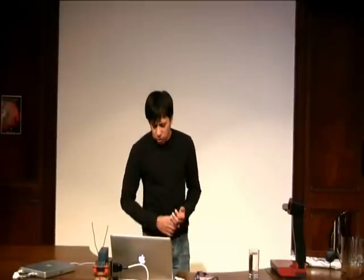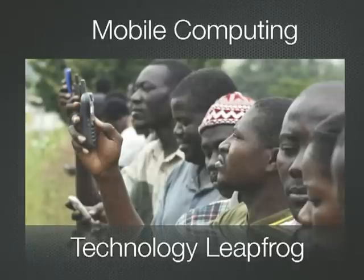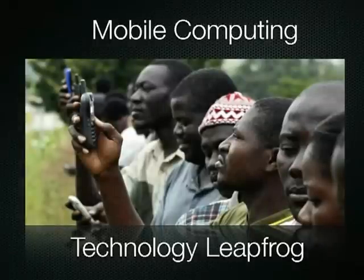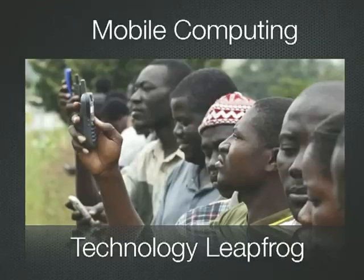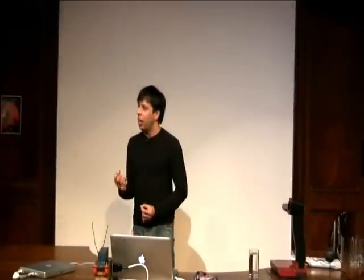Some of the more interesting things that mobile phones have done for us, we don't quite realise yet. For one thing, mobile phones are cheap and they are for everyone — it's not just a first world technology. There are entire communities in Africa, for example, that have never seen a regular landline and they've leapfrogged completely into mobile phones. That's powerful because it means mobile phones are all inclusive — no one's going to be left behind.